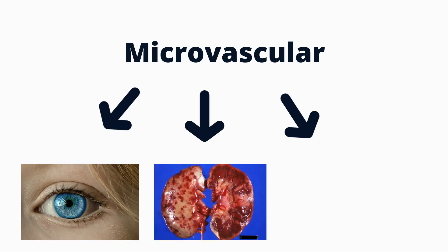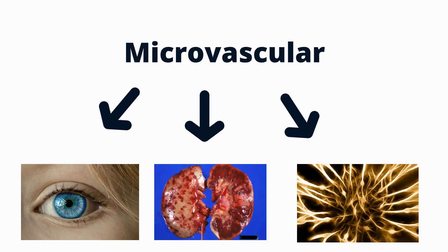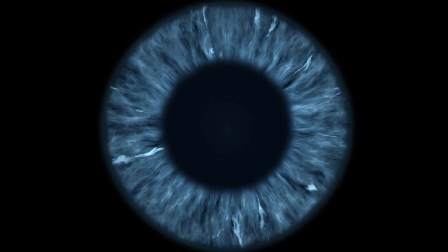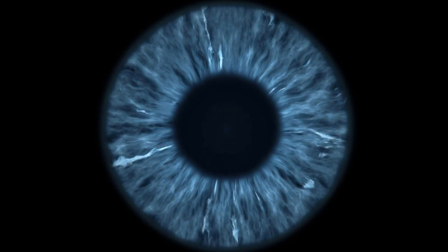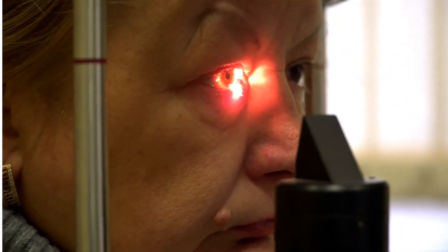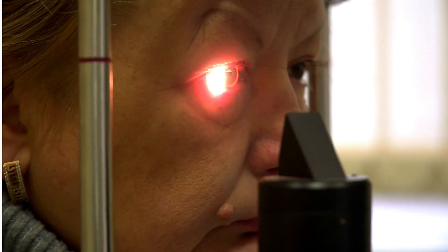Moving on to microvascular complications. Examples of small vessels are eye vessels, kidney vessels, and nerve vessels. Damage to eye vessels is known as diabetic retinopathy. Common symptoms include blurring of vision, transient loss of vision, or eye pain. It often takes years and years to develop, so by the time you've suffered from blurring of vision, it's too late. Besides the vessels, diabetes can also affect the lens, causing cataracts and glaucoma.